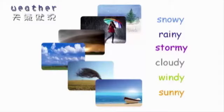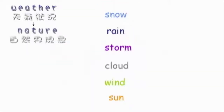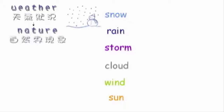看過這些形容天氣的字之後，我們來看看如果把這些字字尾的 y 去掉，每個字就變成名詞，也就是像雪、雨、風、雲等等這樣大自然的現象。下雪的 snowy 去掉 y 就是 snow（雪）。